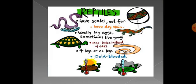Reptiles have scales, not fur, and they have dry skin. They usually lay eggs and sometimes give birth to live young. They have air holes instead of ears. They have four legs or no legs and they are cold-blooded animals.